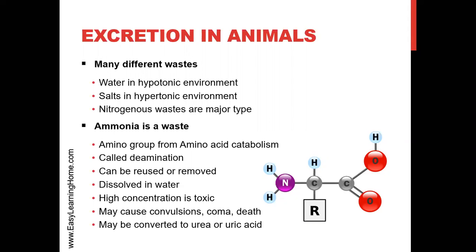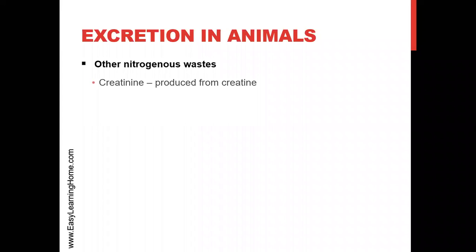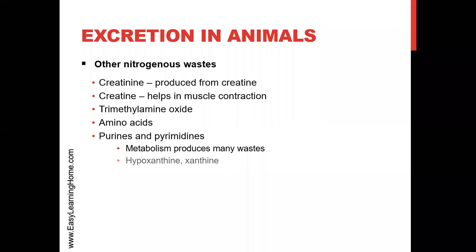If ammonia builds up in the body, it can start to damage your body. The body converts ammonia into less toxic forms such as urea or uric acid. Both urea and uric acid are made from ammonia, and are produced by the body to make excretion safer. These are also nitrogenous waste chemicals in your body — nitrogen-containing compounds.